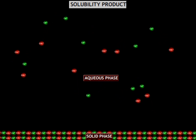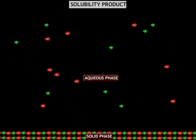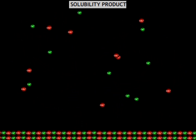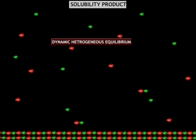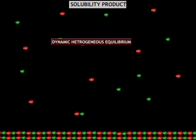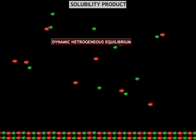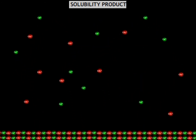There exists an equilibrium between these ions and the solid calcium carbonate which is in contact with them. This equilibrium is dynamic in nature and there is interchange of particles between the solid and liquid phase, although the concentration of the ions remains the same in the liquid phase.